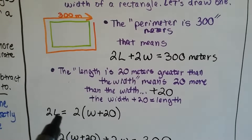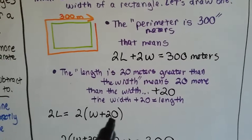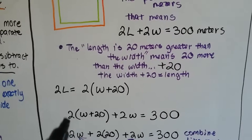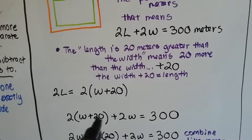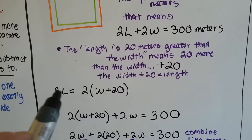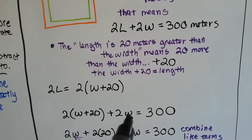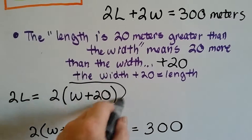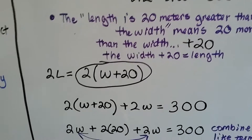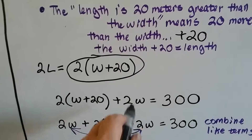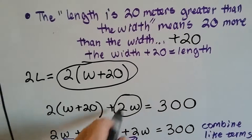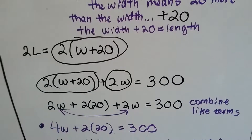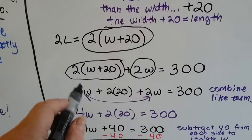We know that two lengths equals two times (width plus 20), because there are two of them. If we add two widths to two lengths, it equals 300. So the two lengths are represented by 2(W + 20) and the two widths are 2W, and together they equal 300.